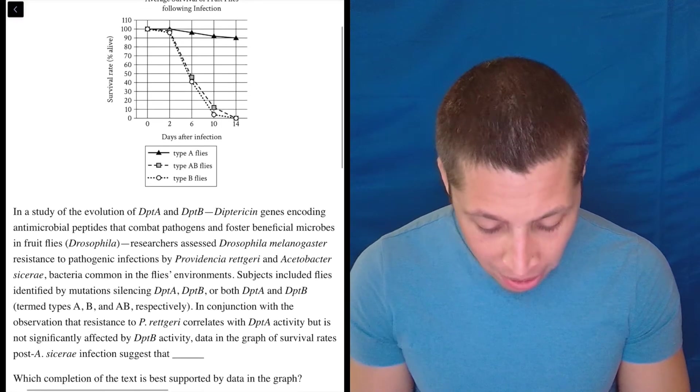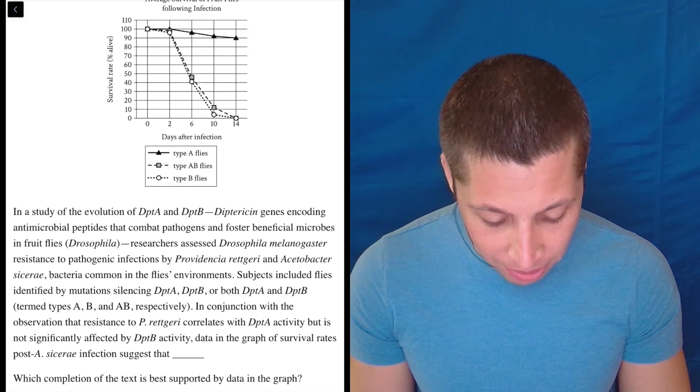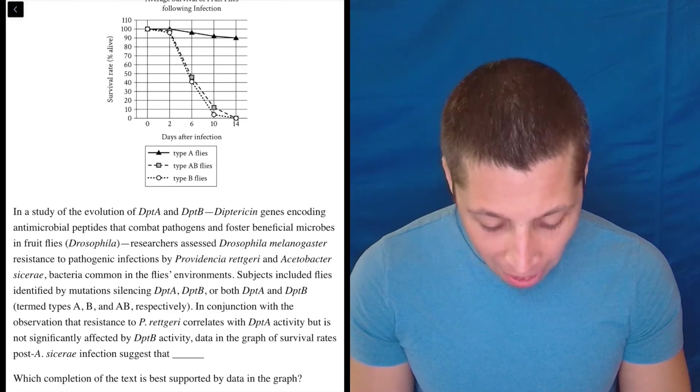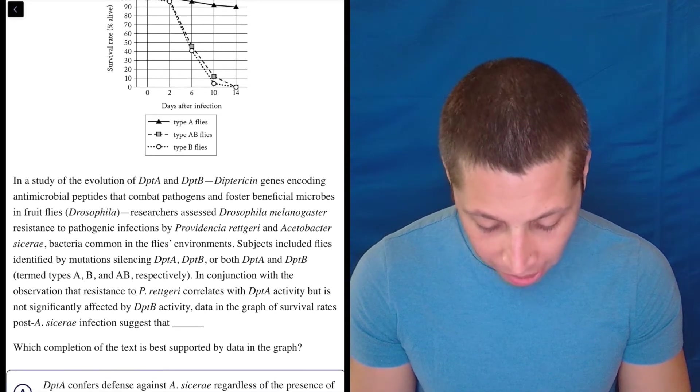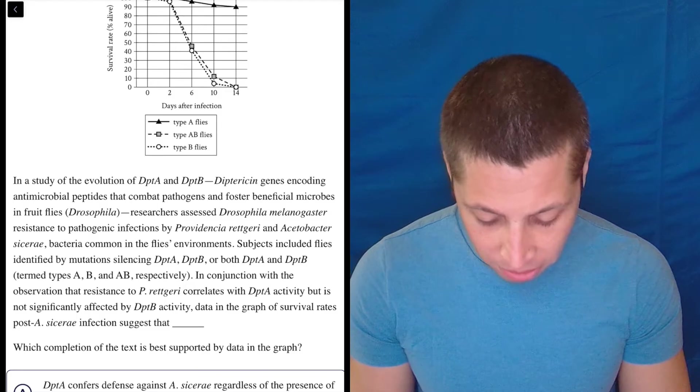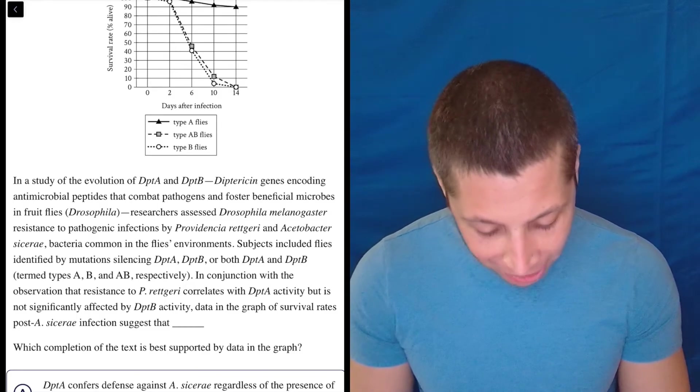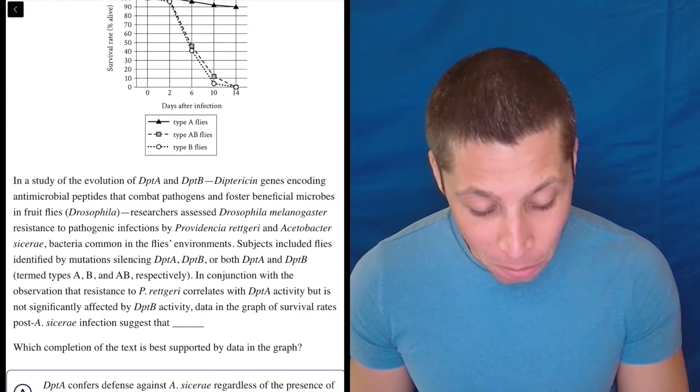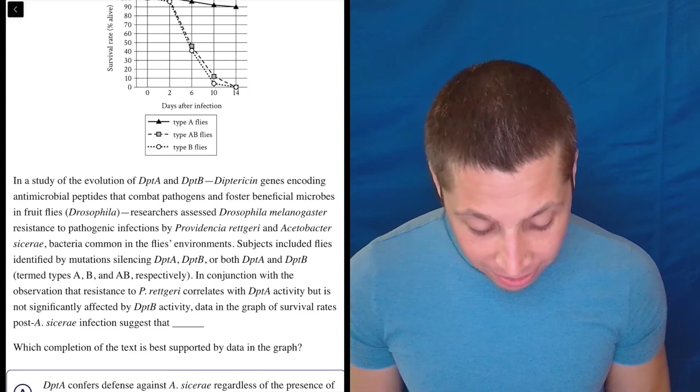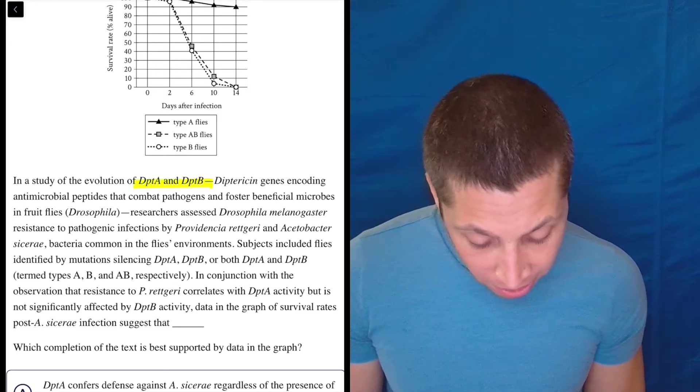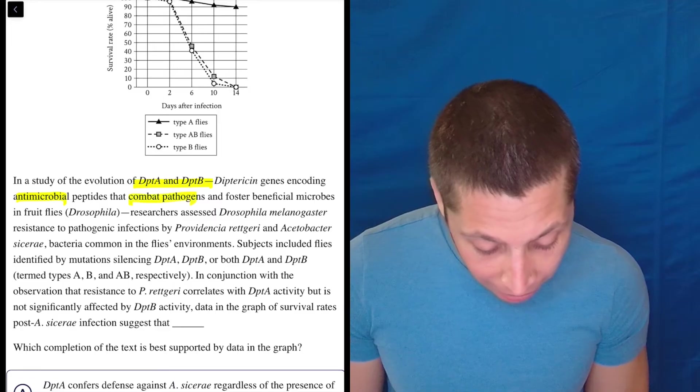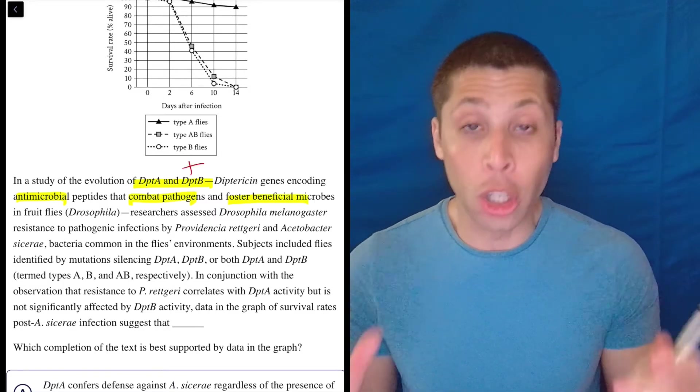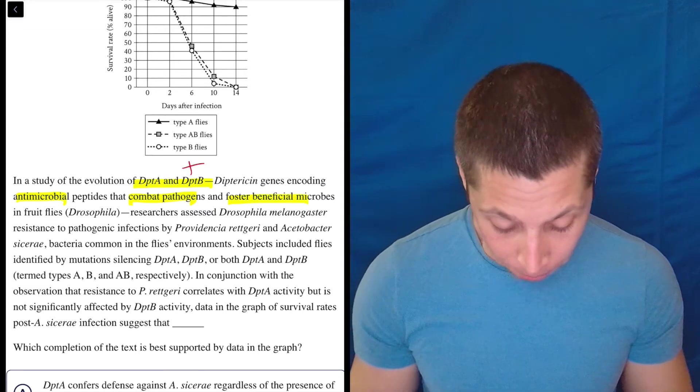So we got to look at the passage. And this is where it gets confusing. In a study of the evolution of DptA and DptB Diptericin genes encoding antimicrobial peptides that combat pathogens and foster beneficial microbes in fruit flies, researchers assessed Drosophila melanogaster's resistance to pathogenic infections by these two bacteria, which are bacteria common in the fly's environment. So, oh my God, already, what the heck is going on? Basically, these genes are antimicrobial. They combat pathogens. They foster beneficial microbes. So, dumb summary: these genes are good, is what we're getting here.